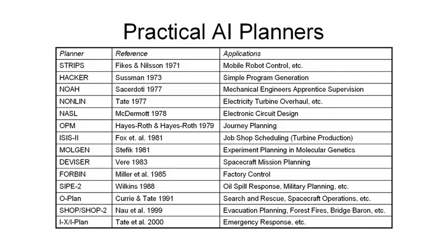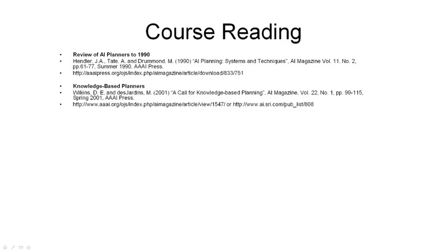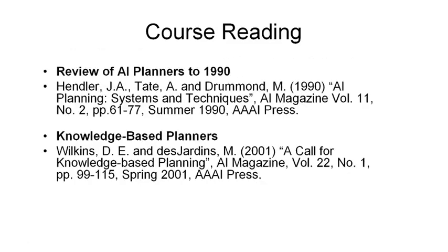As part of this course, we're going to encourage you to look at a number of readings. In particular, there are two reviews of AI planning which we hope you'll find useful. One is from the 1990s — quite dated, but it includes a lot of the work on early planners and formative techniques. That's the Hendler, Tate and Drummond paper in AI Magazine on AI planning systems and techniques. There's also a review a decade later by Wilkins and Desjardins, a call for knowledge-based planning, where techniques of knowledge-based systems and planning were being brought together. Full details and PDF locations will be available in the course wiki.